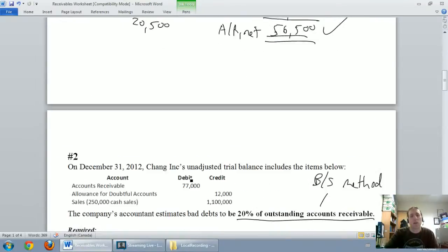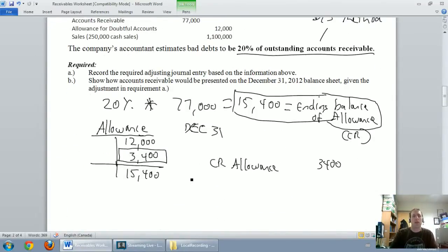Debit bad debt expense, credit the allowance for doubtful accounts. I'm getting lazy and just calling it the allowance, but you may need to write out the whole spiel there. I put bad debt expense. Bad debt expense is $3,400.